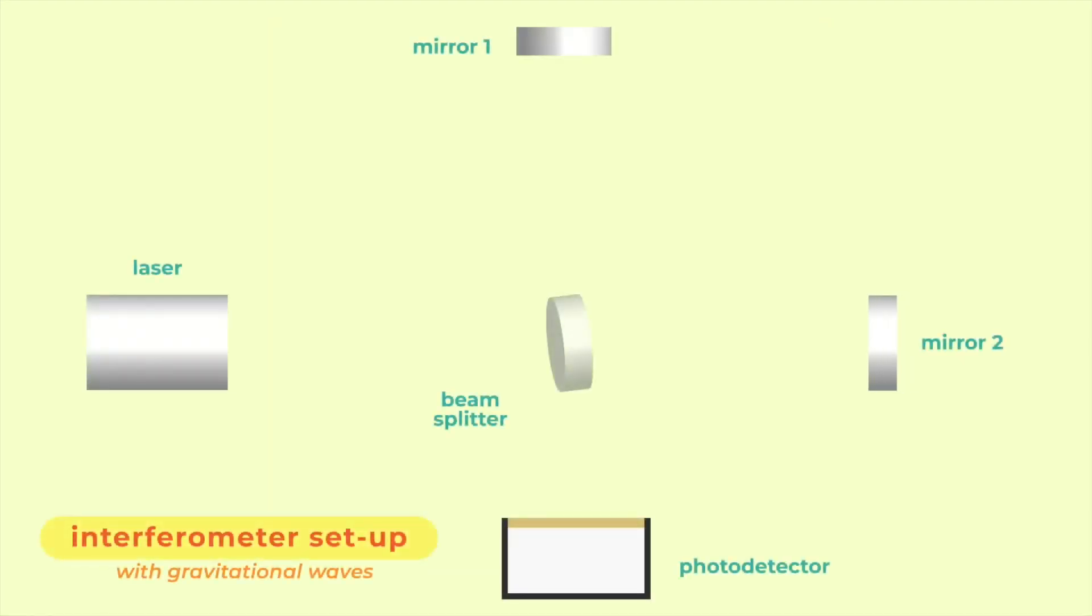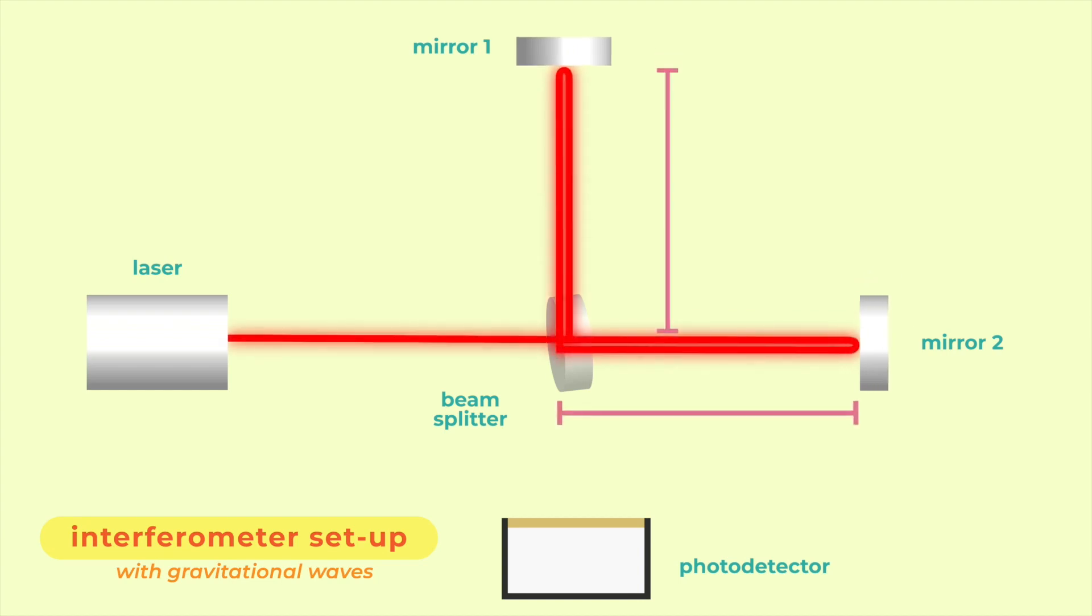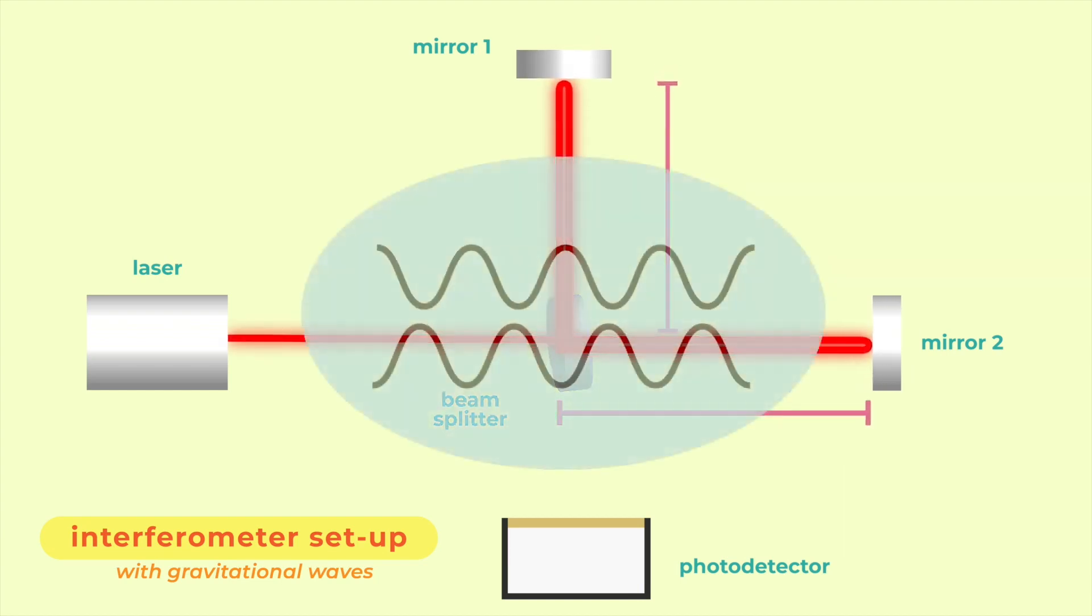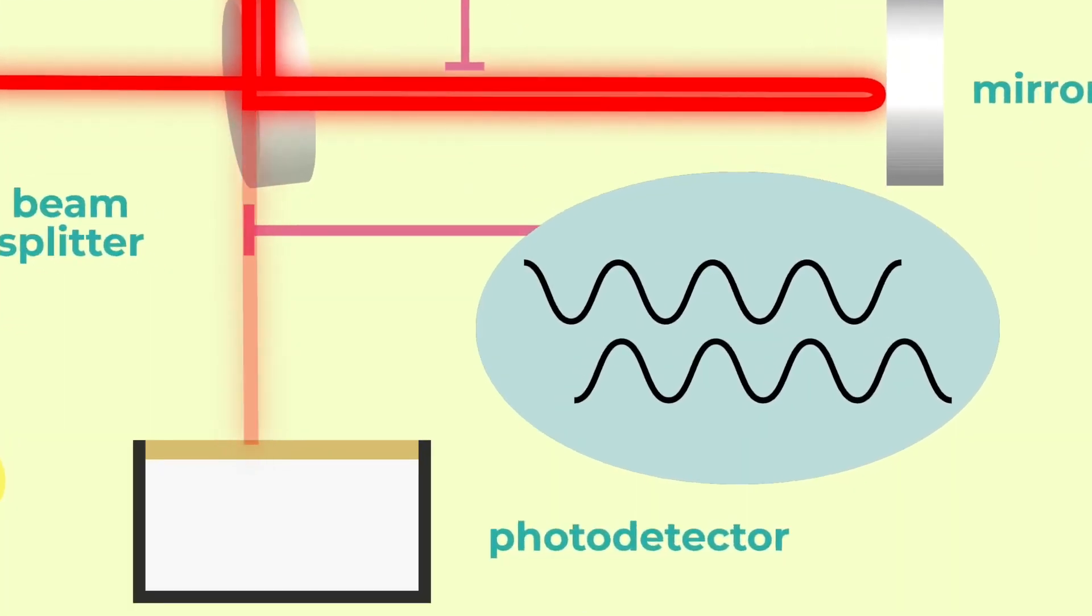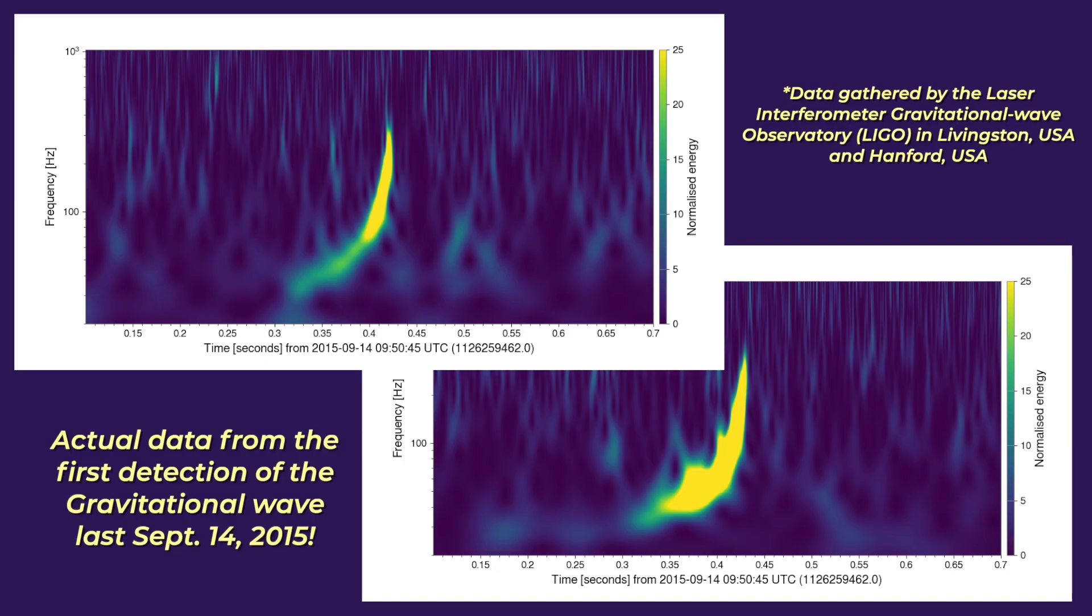But with gravitational waves, the compression and expansion in spacetime allows the arm's distances to change, altering the beam's distances and its resulting light waves. The changes in alignment lead to varying light intensities, which is recording the gravitational wave.